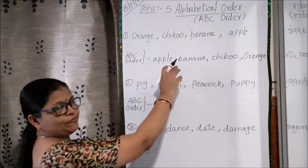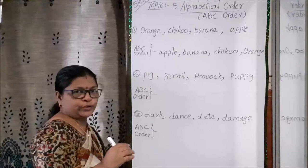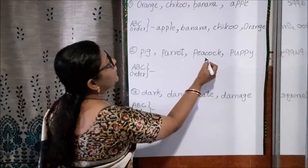See how the words are arranged in alphabetical order. A, B, C, then O is there, right? So this is the first one I have showed you. Now let's see the second one. The words are given: pig, parrot, peacock, puppy.